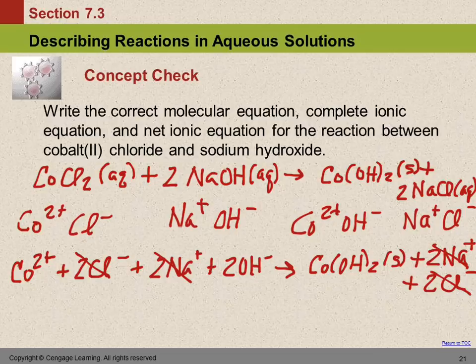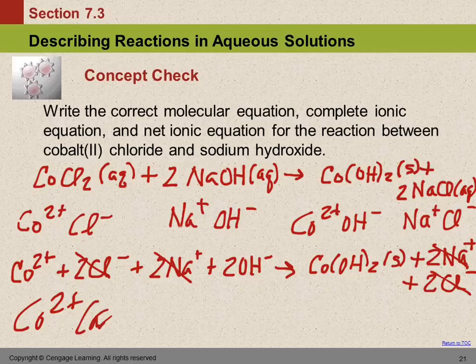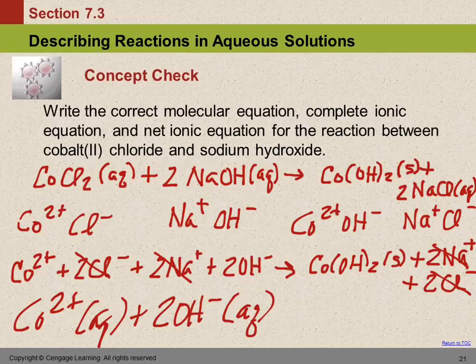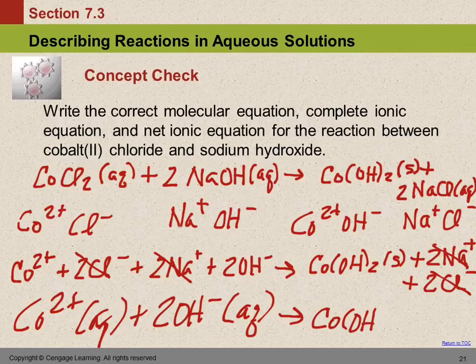So now we're just going to copy down everything that didn't get crossed off. I'm going to put the state symbols back in here just because I have room. So, cobalt 2+ plus 2OH− aqueous. My handwriting is really not as horrible. Something about using your finger, it just doesn't work as well. Co(OH)2 solid. That's the net ionic equation. It's super messy.